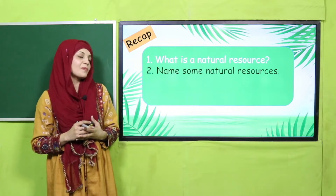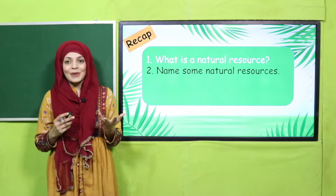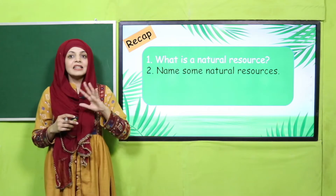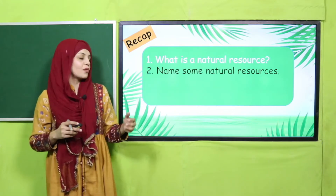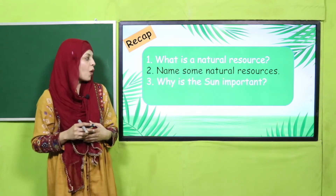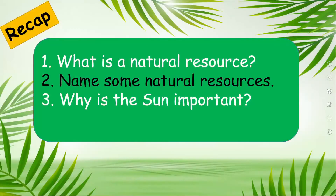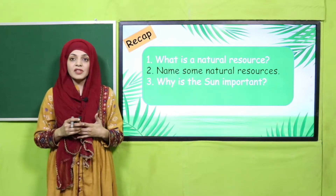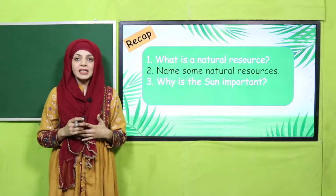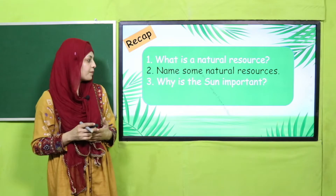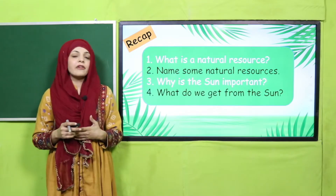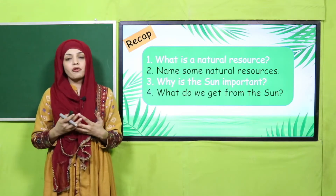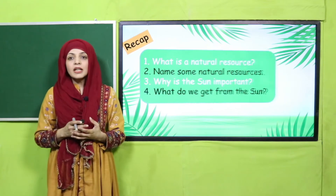Like water, sun energy, land, air — these all are natural resources. Next, tell me the names of some natural resources. Sun, water, air, land — these are all natural resources. Now, why is the sun important? Because it gives us heat and light. Very good. What do we get from the sun? We get light, heat, and energy from the sun.